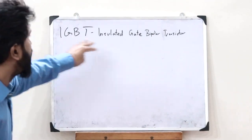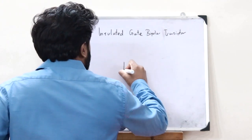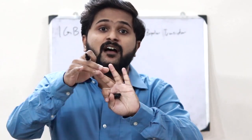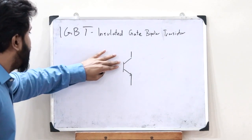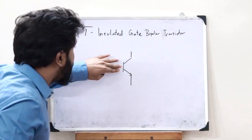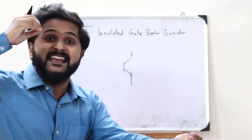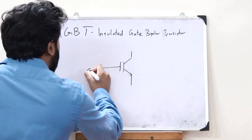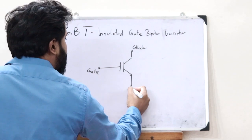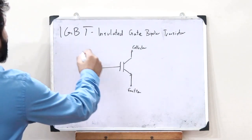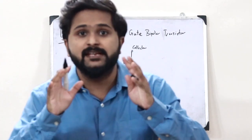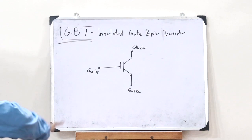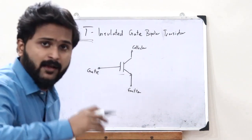Let's draw the symbol of a particular IGBT. We know that the symbol of a transistor looks somewhat like this. In the case of IGBT, it has got three terminals: an emitter, a collector, and a gate. As the name suggests, the gate must be insulated, so a capacitance is placed there to provide that insulation. This is the gate, this is the collector, and this is the emitter — that is the basic symbol of an IGBT.